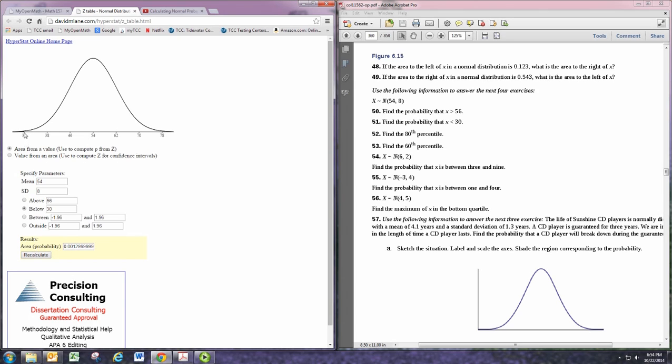Here, the area is so small that it's hard to see on the graph, but it is shaded to the left of 30, and you can see we have a small number for the area.